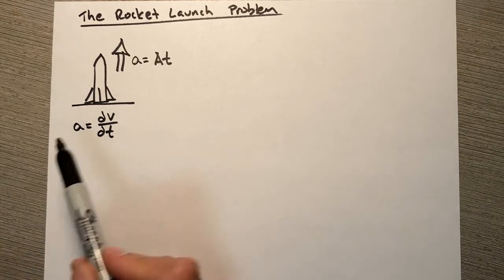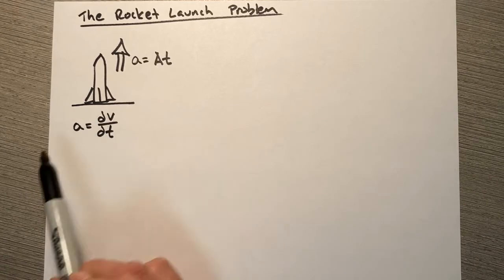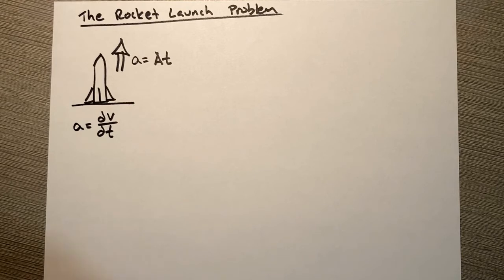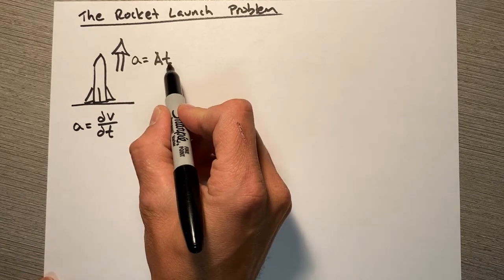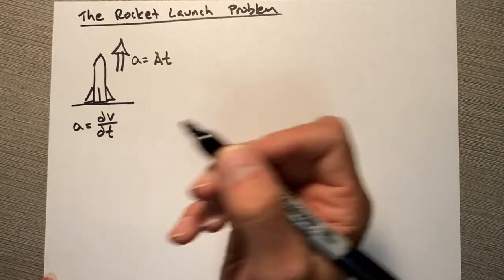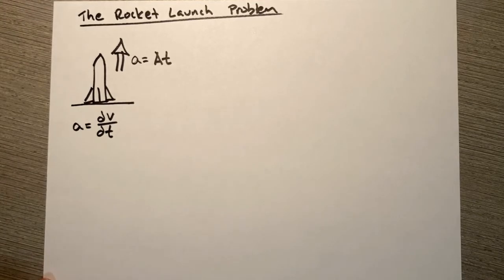Or to put it another way, the rate of change of velocity over change in time is going to be acceleration. So we're just going to integrate our function here with respect to time. That's our variable we're integrating with respect to—it's not like math where you're always integrating with respect to x or y.